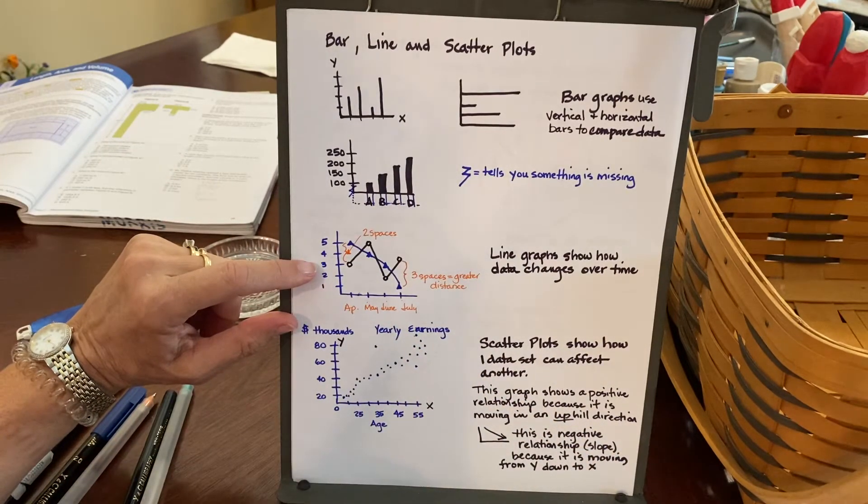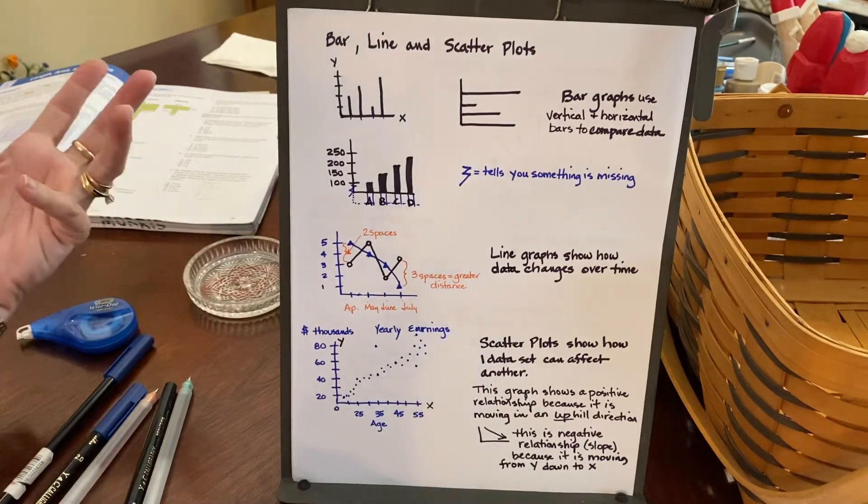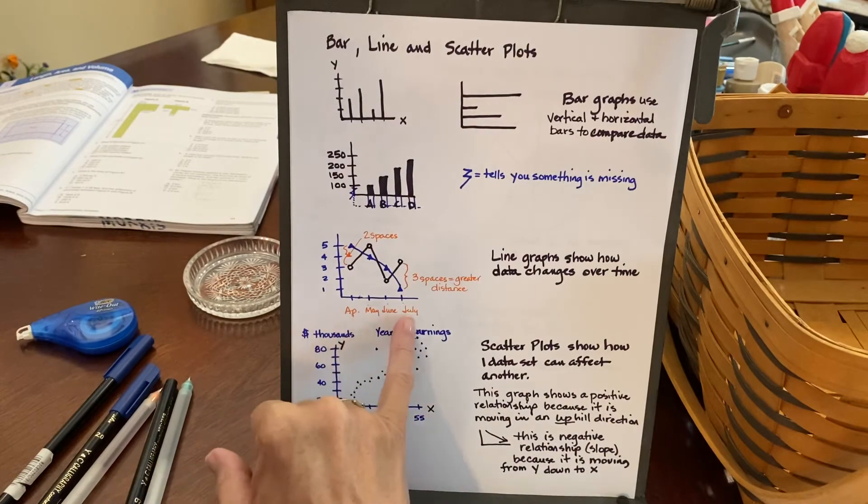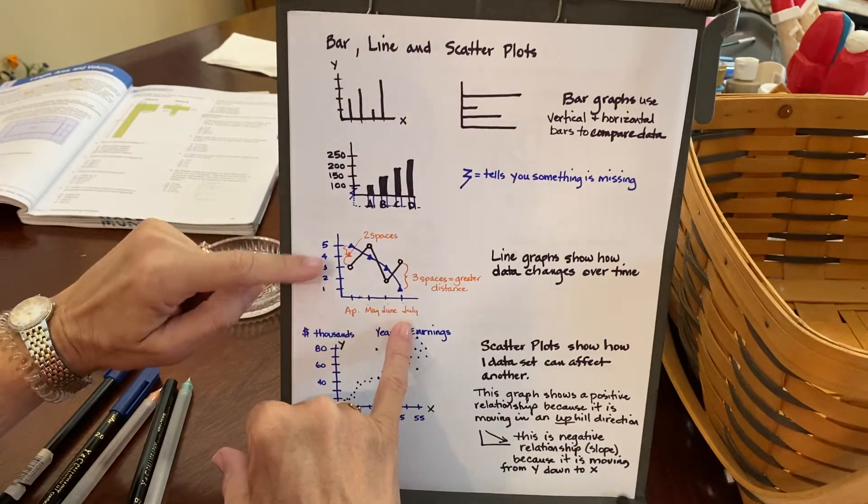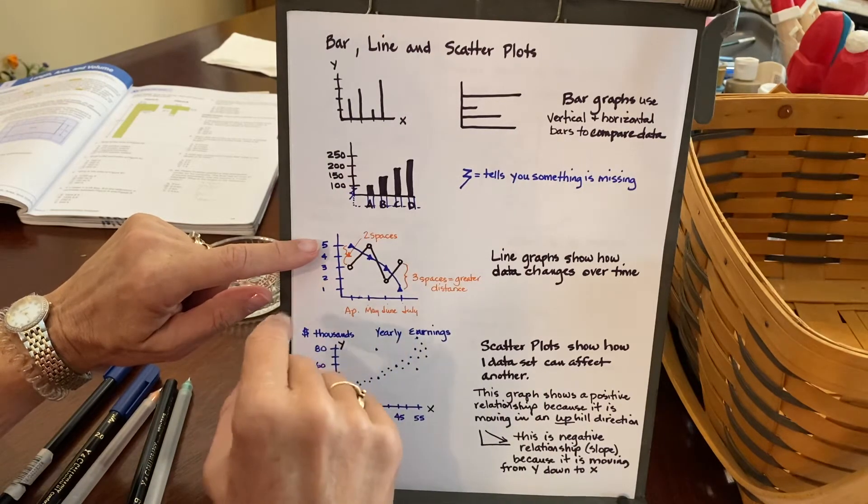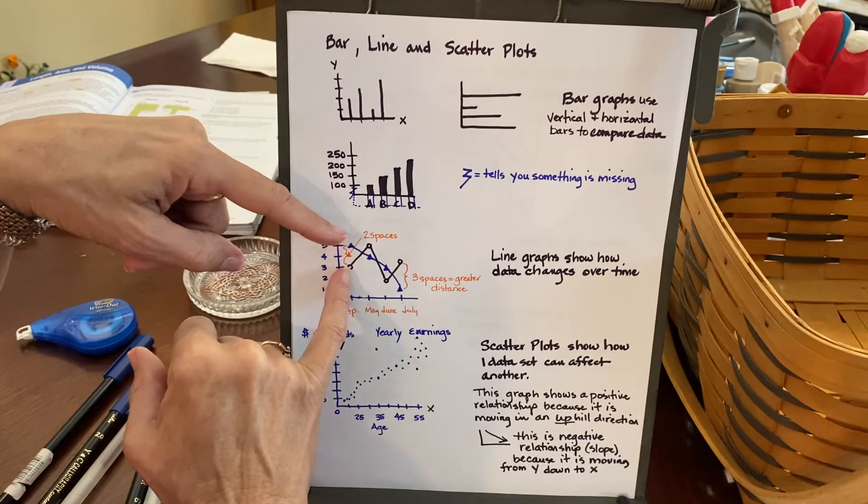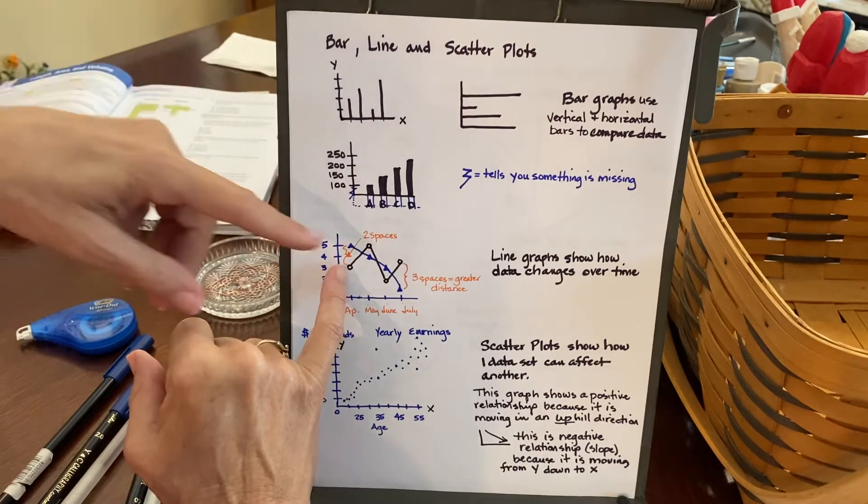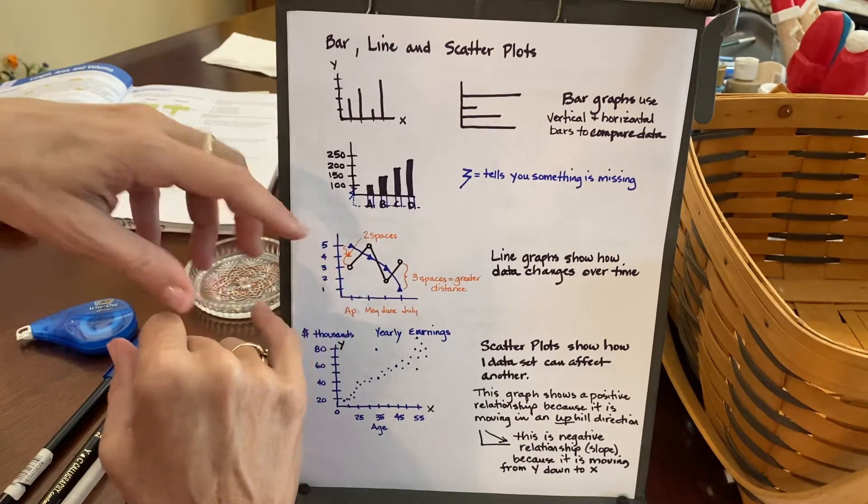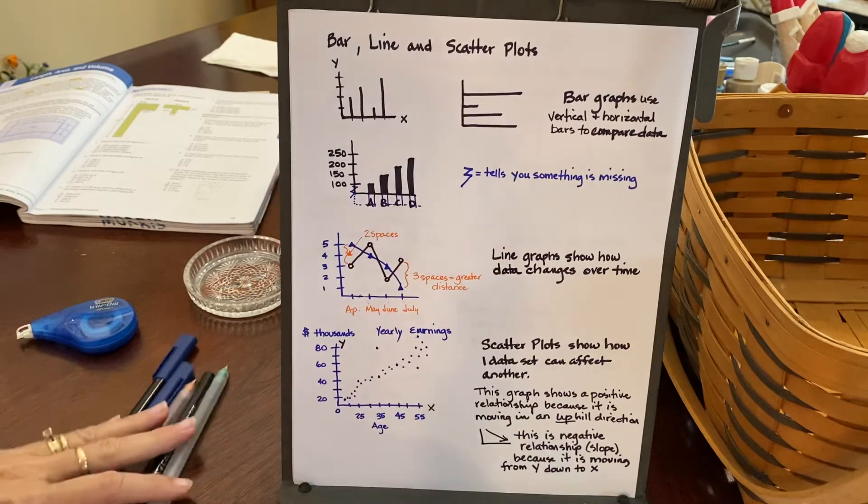Line graphs show how data changes over time. So for instance, in this particular thing, I'm showing months down at the bottom. I am showing numbers going up on the y-coordinate. And so I have these two separate—I've got a little triangle shape and a little circular shape, two separate icons that are representing two different either places or people or things. They'll tell you what those represent.